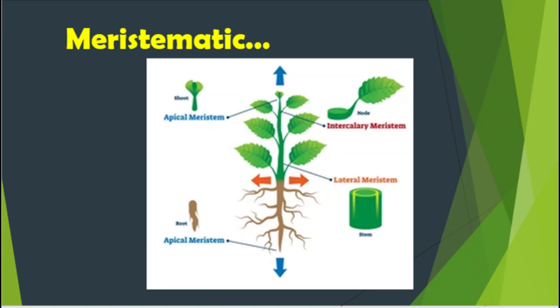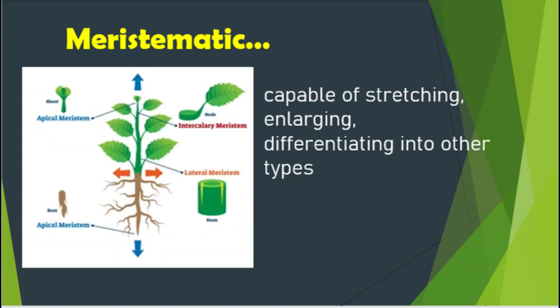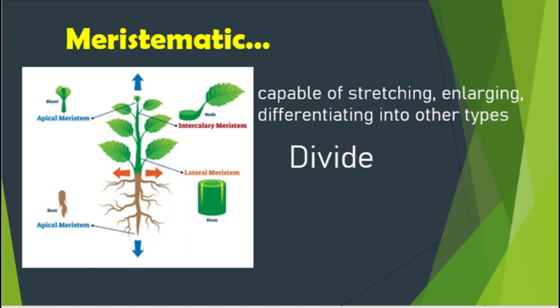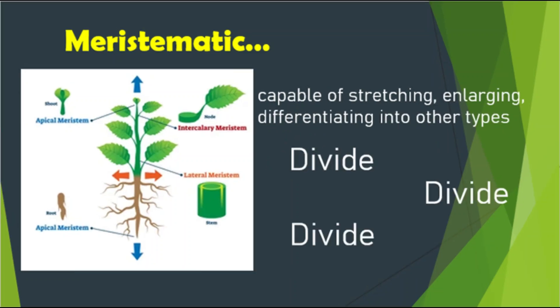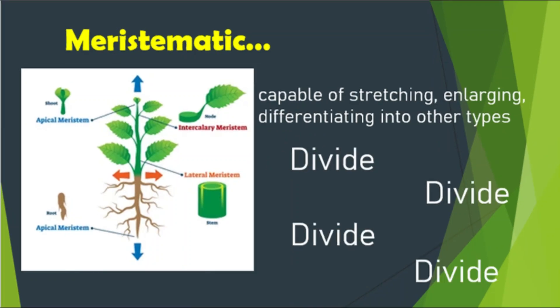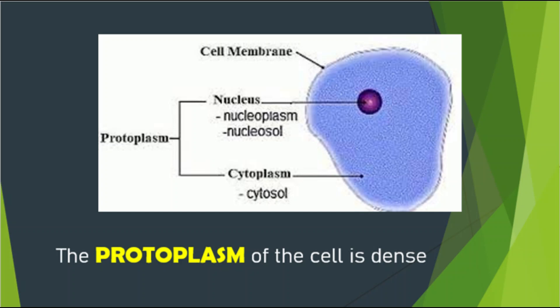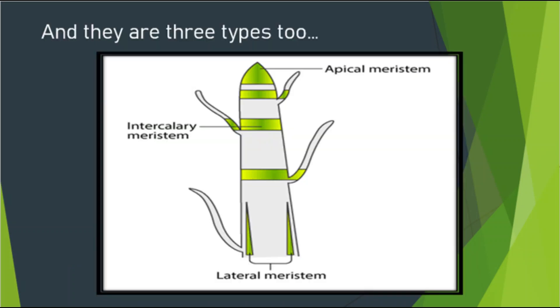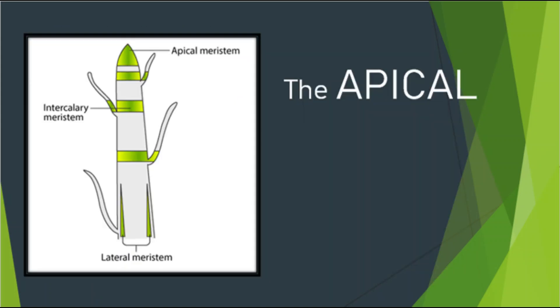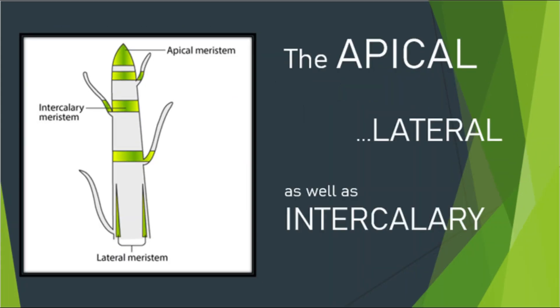Meristematic tissue is capable of stretching, enlarging, and differentiating into other types — they divide continuously. The protoplasm of the cells is dense. There are three types: apical, lateral, and intercalary.